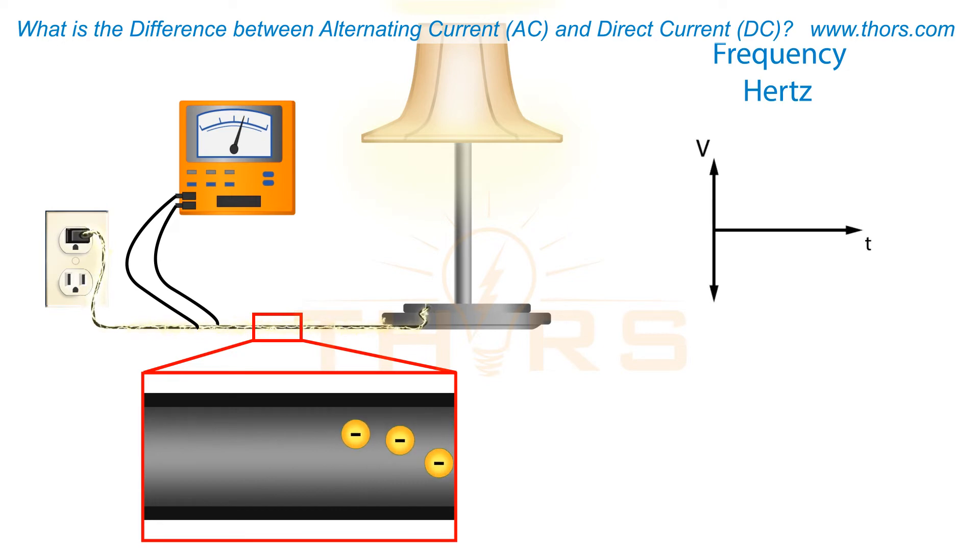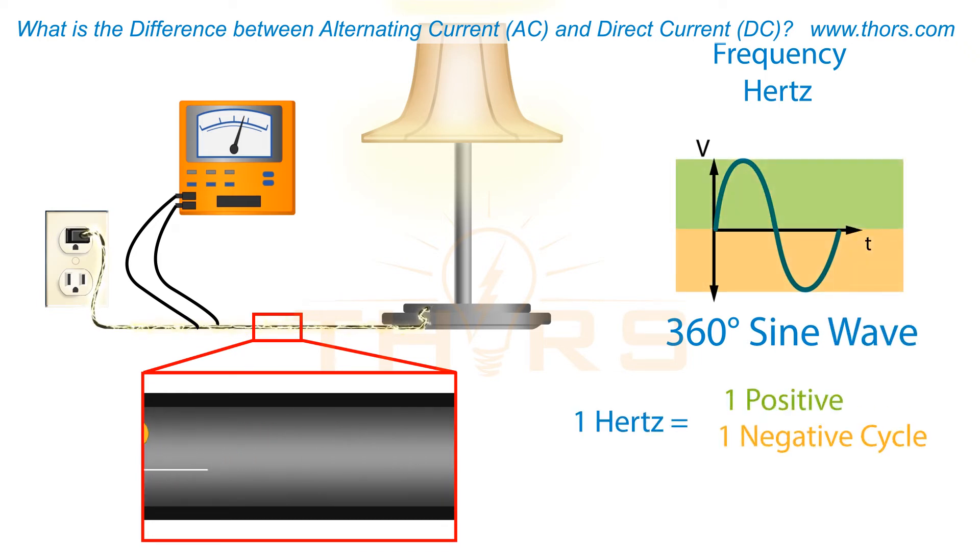When graphed, AC current resembles what is known as a 360 degrees sine wave. Each Hertz represents one negative and positive cycle.